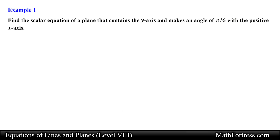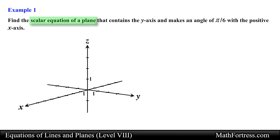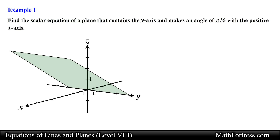Alright, let's end the video by going over an example. Find the scalar equation of a plane that contains the y axis and makes an angle of pi over 6 with the positive x axis. We are going to need a point on the plane and a vector normal to the plane to find the equation of the plane.